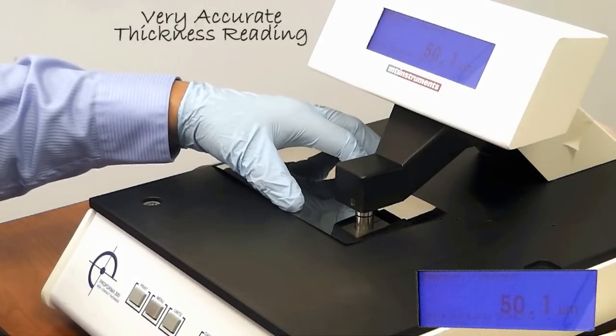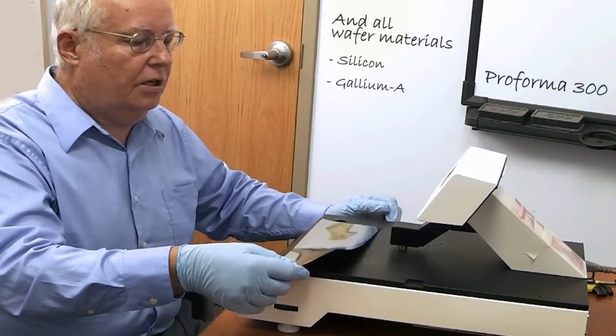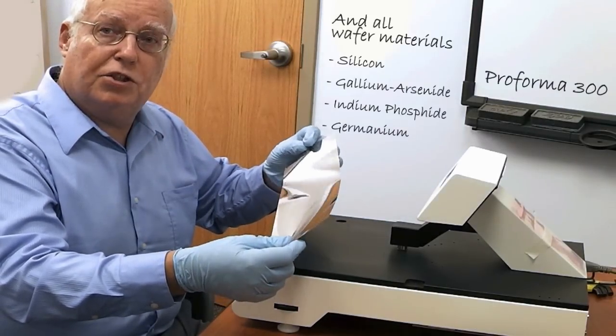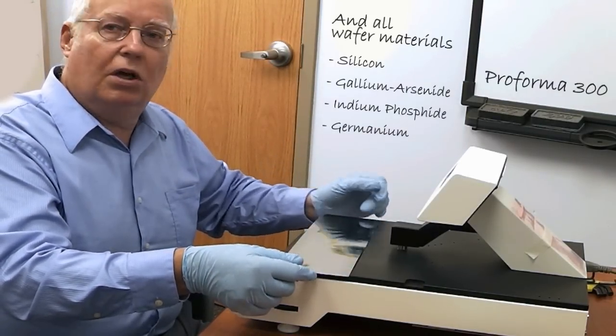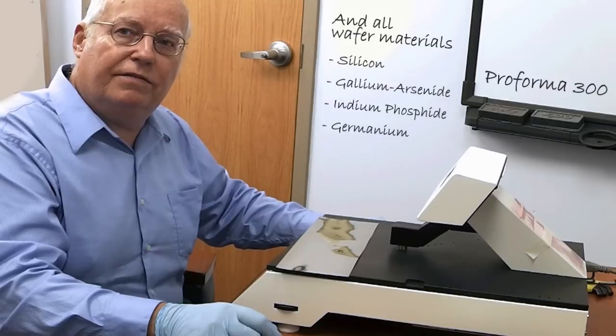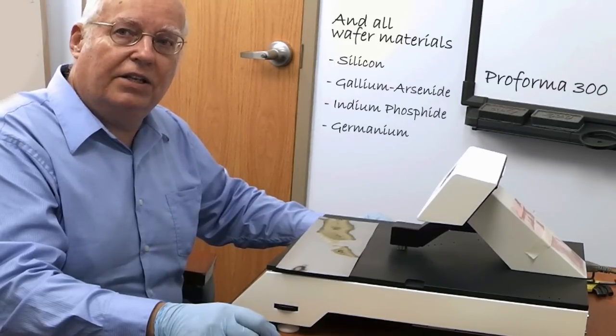So essentially what we're doing is getting very accurate thickness measurements to within a half a micron or better over the surface that we're measuring. In addition to thin conductive materials such as we just tested, the gauge will also easily handle 3 inch, 4 inch, and 6 inch wafers.